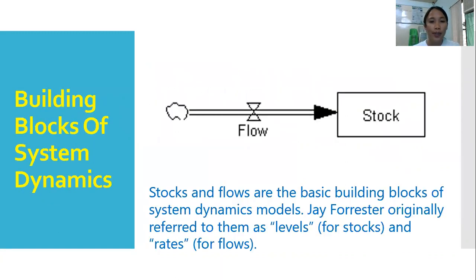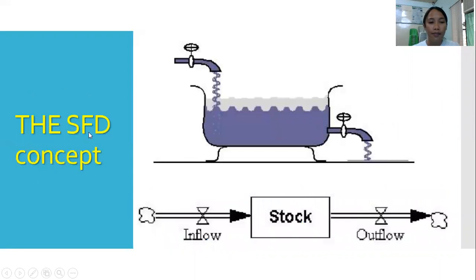The basic building blocks of system dynamic models are the stocks and the flows. Jay Forrester, the father of system dynamics, originally referred to them as the levels for stocks and the rates for flows.